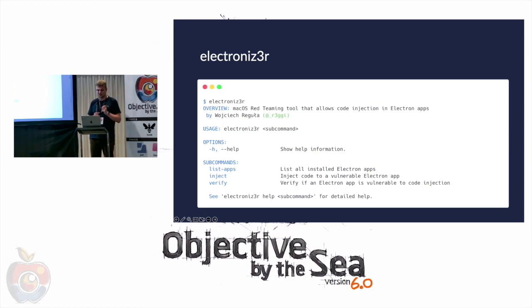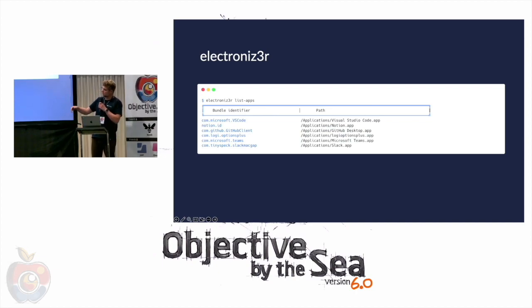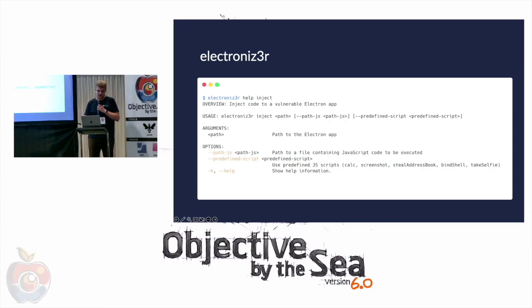Electronizer is free and open source — you can check it on my GitHub. It has three subcommands: the first will list installed Electron apps; the second subcommand verifies if the application is vulnerable to this attack; and inject will inject the code. You can inject your custom JavaScript file, or use one of my predefined scripts: spawn calculator, take screenshots, steal address book, bind shell, privilege via TCC shell, or take a selfie.